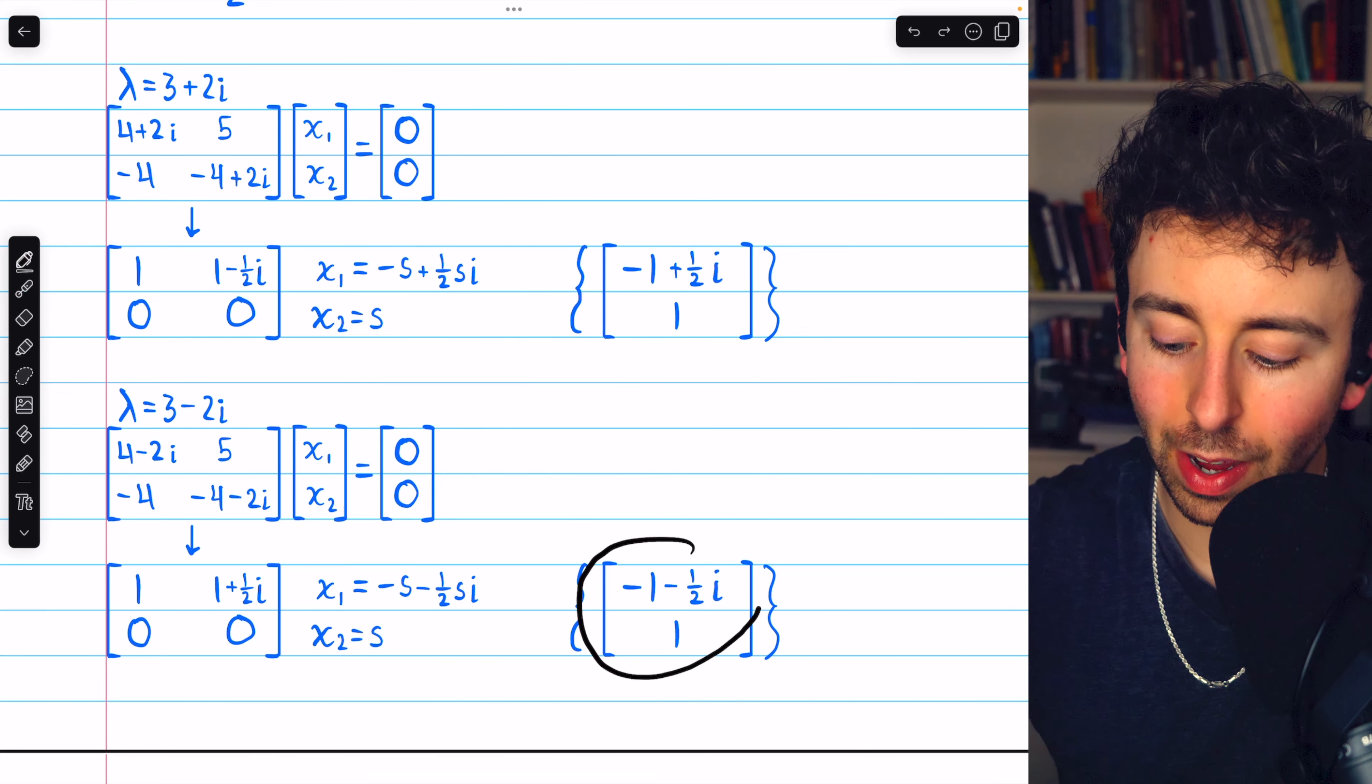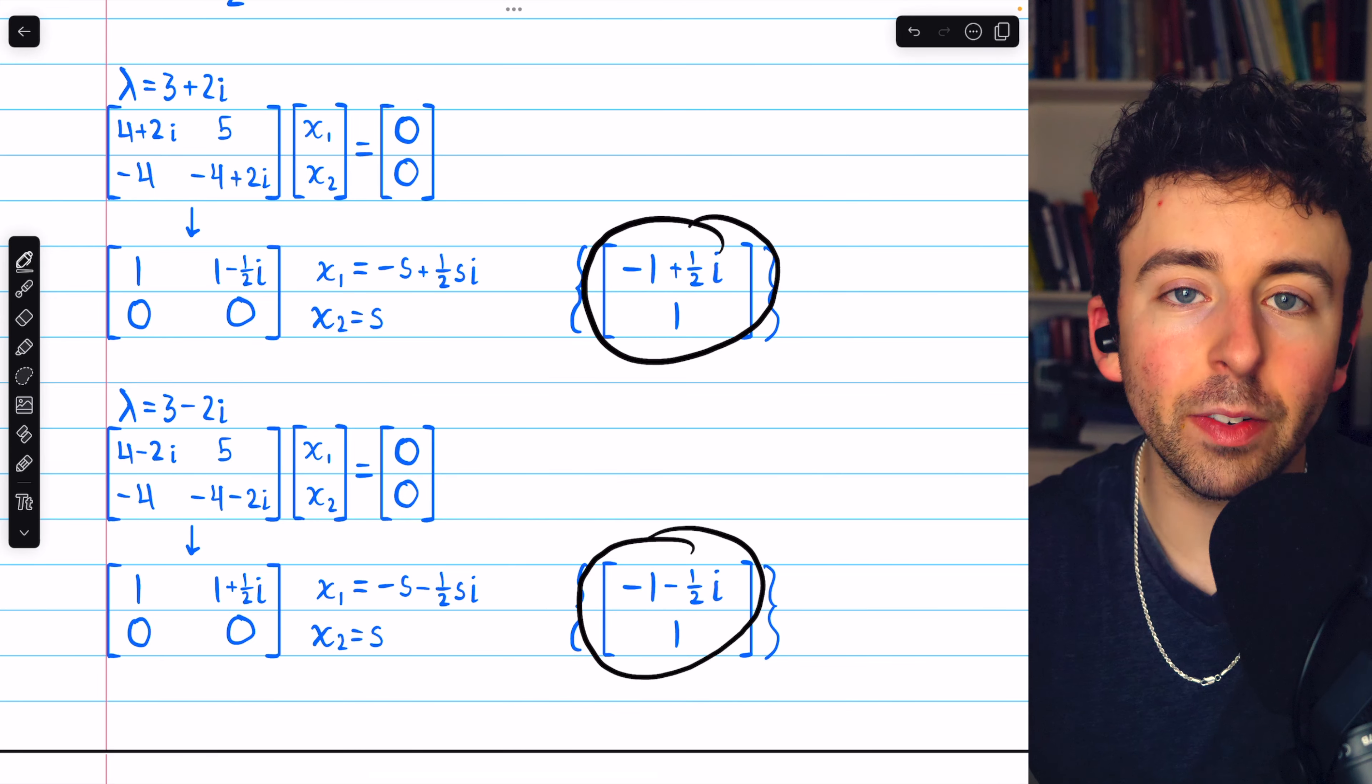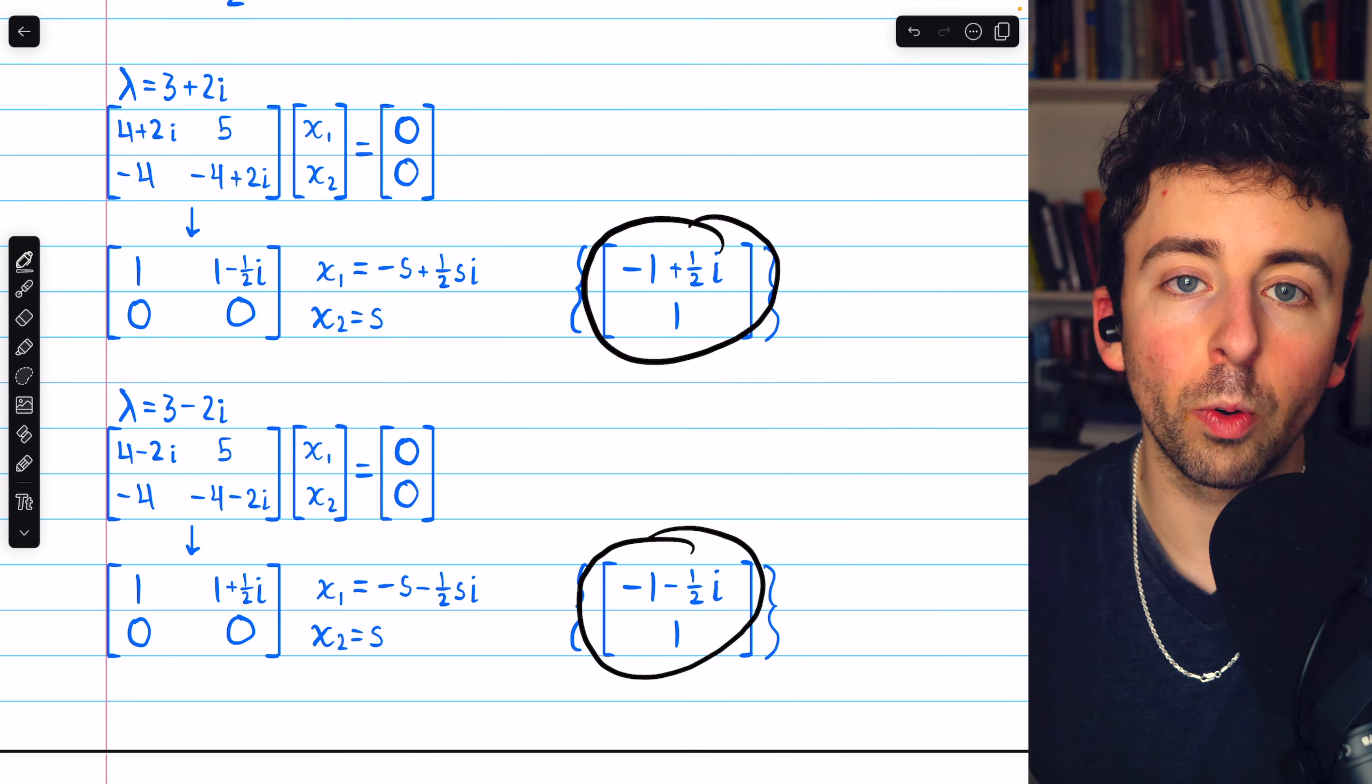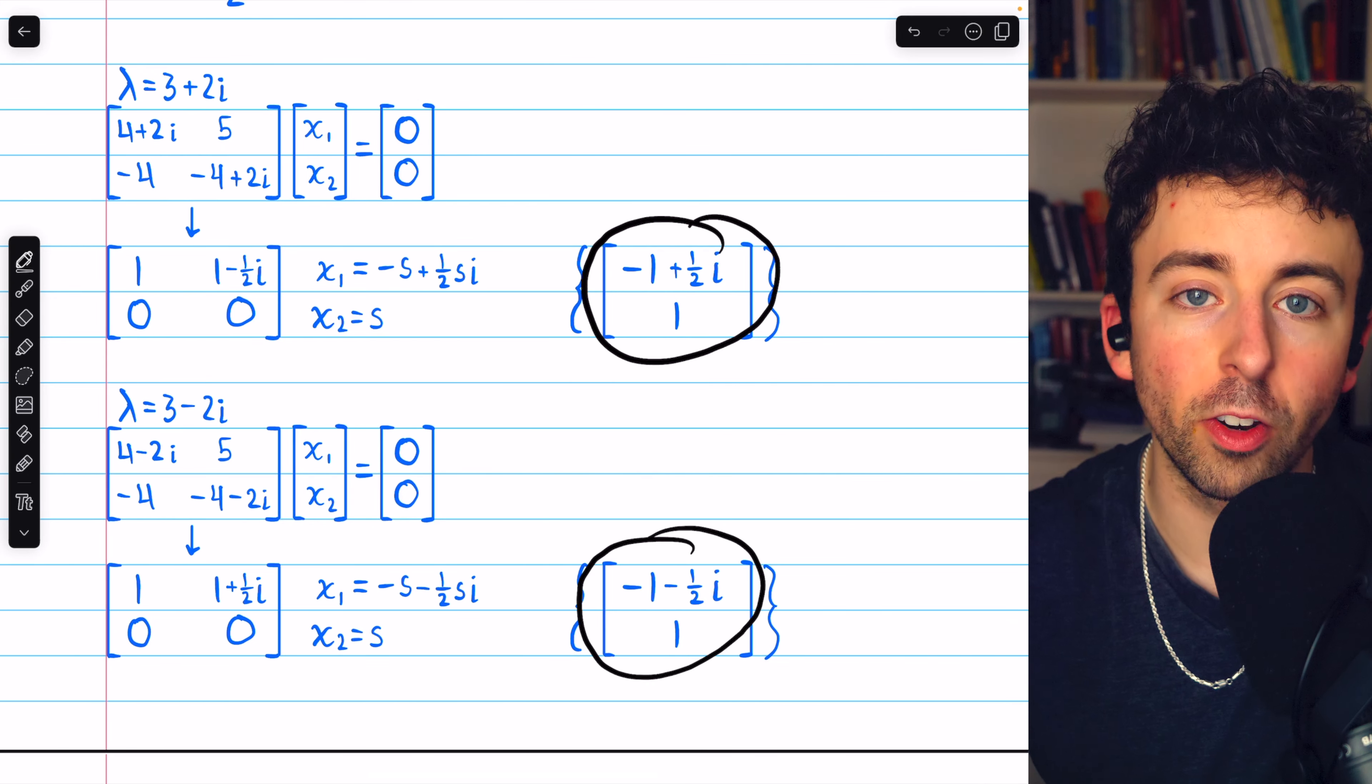And again, notice that this vector is the conjugate of this other one. Eigenvalues and eigenvectors for real matrices occur in conjugate pairs.